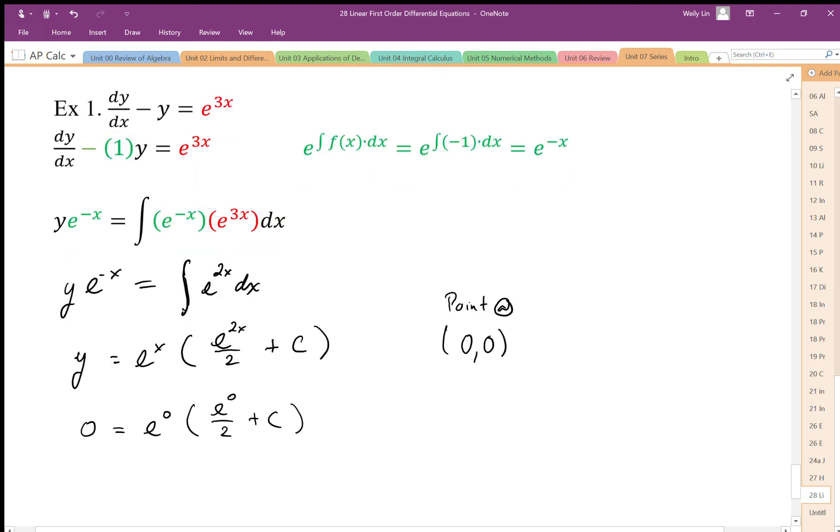So to get zero here, we're going to end up with one times one half plus c. So c equals negative one half. So then the specific solution for this differential equation becomes e to the x, e to the 2x over 2 minus one half.